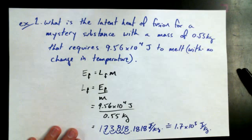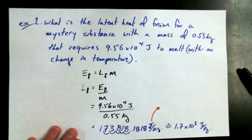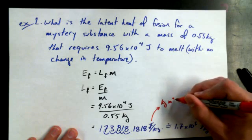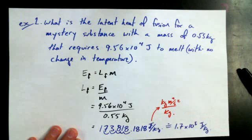And then, what somebody was saying earlier about these units, because we usually do leave it in joules per kilogram, but joules is kilogram meter squared per second squared. So, divided by kilograms, so the proposal was that we could write the units for this latent heat of fusion constant as joules per kilogram.